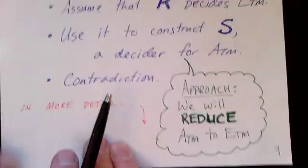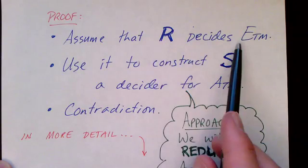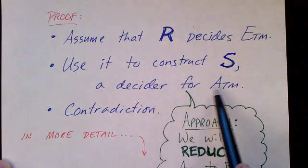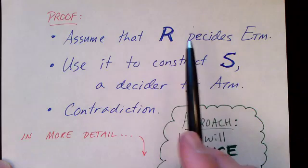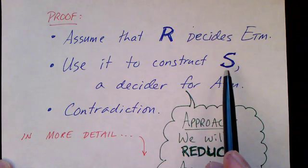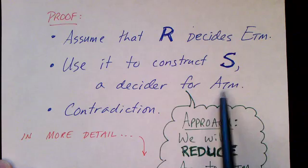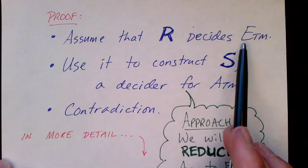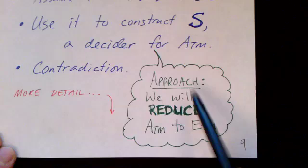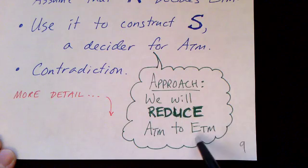Here's an outline of our proof. We're going to assume that we have a decider for this language — that emptiness testing is decidable — and then we're going to use it to construct a decider for the acceptance problem of Turing machines. If we could construct such a decider that would be a contradiction, so our conclusion is that emptiness testing of Turing machines is undecidable. We reduce the acceptance problem into the emptiness problem.